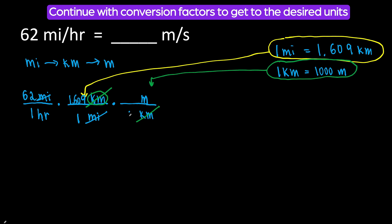So we will put one kilometer in the denominator and 1,000 meters in the numerator. Kilometers canceled out, and we are left with meters.